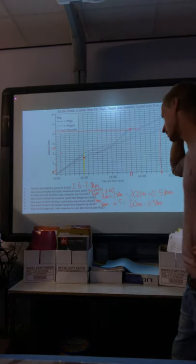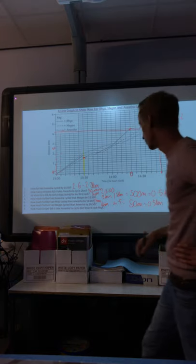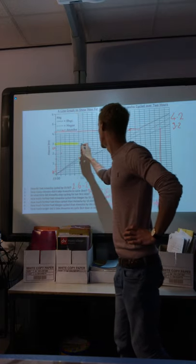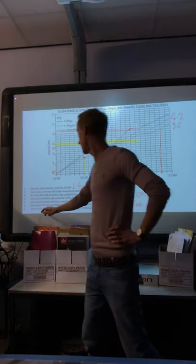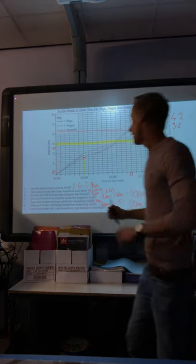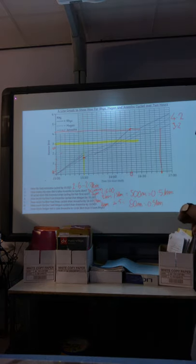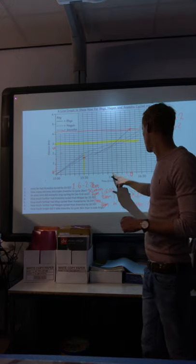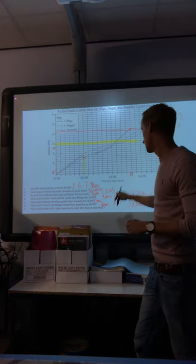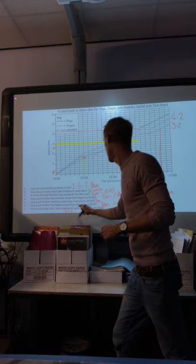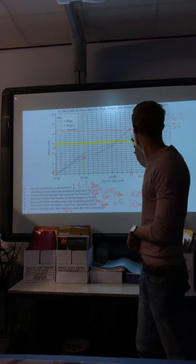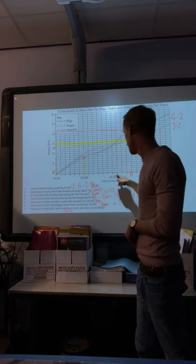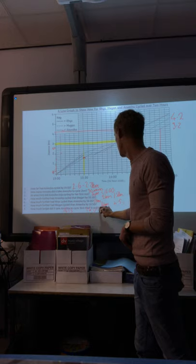How much longer did it take Anisha to cycle 3 kilometres than it took Rhys? So Anisha, 3 kilometres. I'll use the highlighter again. I find that a helpful strategy. It shows the line that I'm comparing. How much longer did it take Anisha to cycle 3 kilometres than it took Rhys? So we're looking for Anisha, the dotted line there, which is 16:15. Then it took Rhys, who is the solid line, isn't it, Rhys? Three kilometres down, that's 16:05.